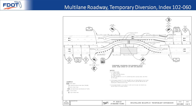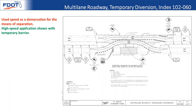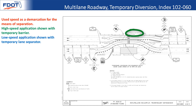Index 102-060, multi-lane roadway temporary diversion, has two different scenarios the designer should pay attention to: a high-speed option on sheet one using temporary barrier, and a lower-speed application on sheet two using a temporary lane separator. This index replaces a number of different indexes that were previously in the standard plans — for a more complete list, refer to the crosswalk on the standard plans page.